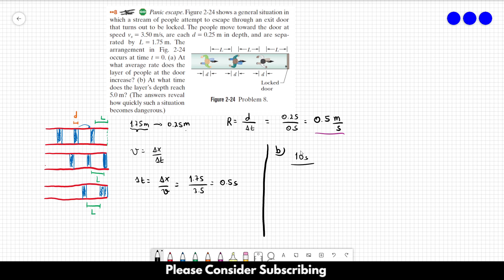If you want to make some calculations, you could just use this equation. R equals D over delta T. Now this time, this D over here is the length of the layer of people. It'd be R times delta T, or rather we want to isolate delta T.